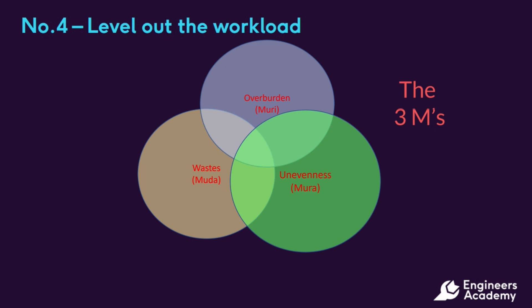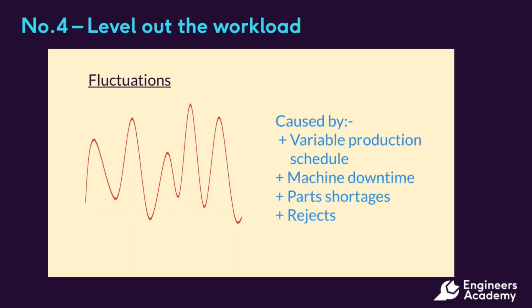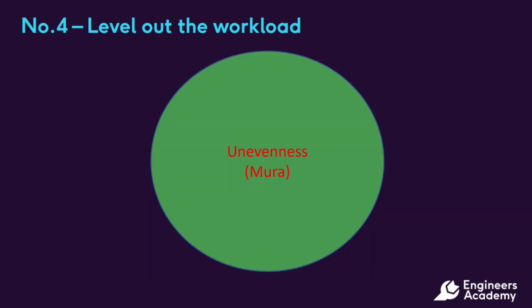In a normal production system there is always a fluctuation in work. Sometimes there is a lack of work leading to idle time, and other times there can be more work than the workforce and equipment can handle. These fluctuations can be the result of a variable production schedule, or caused by system issues such as unplanned machine downtime, unexpected part shortages, or rejects. With this management principle, the focus is on mura — the unevenness.